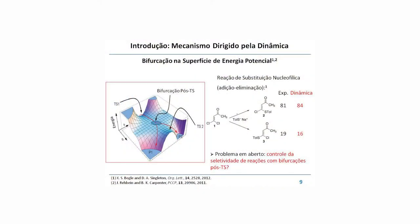A partir de 2009, 2010, começaram a surgir inúmeras outras reações em que os produtos dependem de bifurcações após o estado de transição. A teoria do estado de transição descreve o equilíbrio entre reagentes e estado de transição, mas o que acontece depois a teoria não descreve. Existem várias reações em que a proporção dos produtos formados depende dessa bifurcação — é como se você tivesse um cruzamento na estrada e não tivesse como decidir para onde vai. Nesses casos, tem-se tentado formular generalizações da teoria do estado de transição, mas não é trivial definir qual produto vai ser formado baseado somente na superfície de energia potencial.